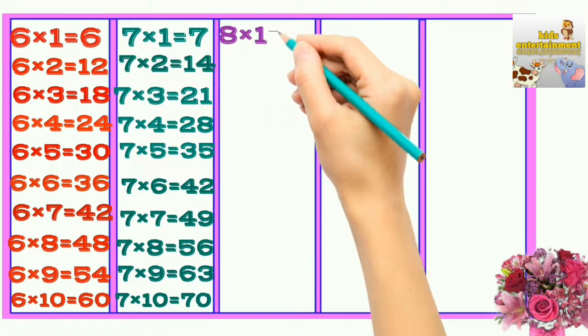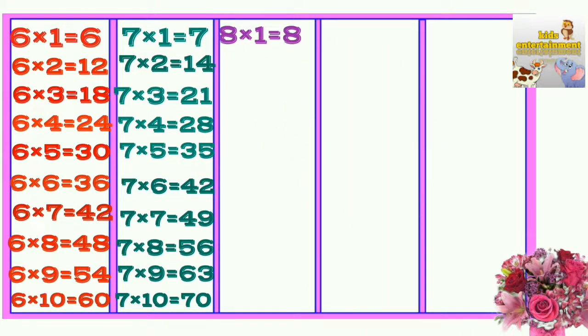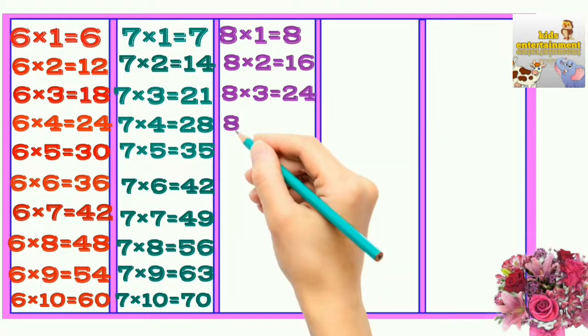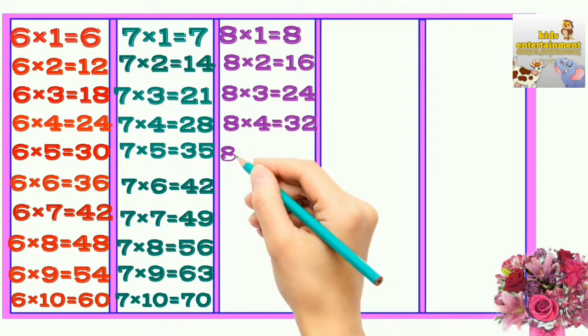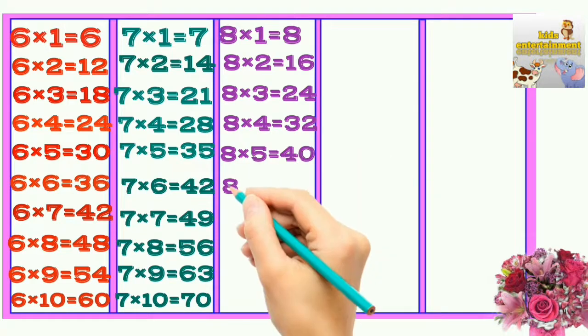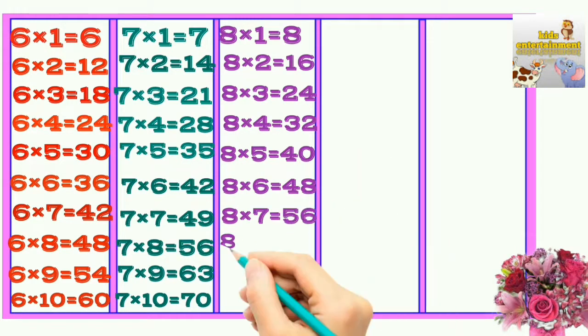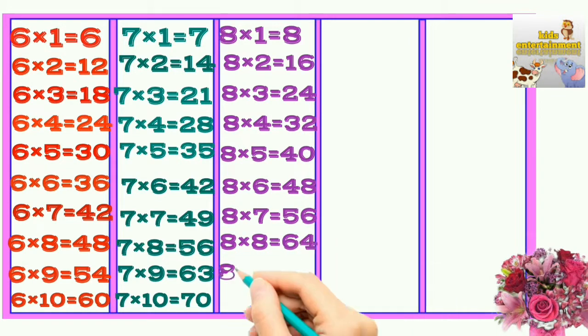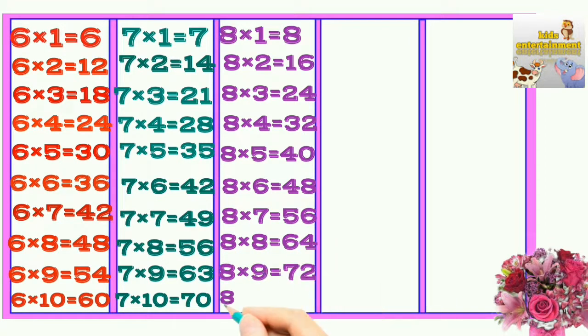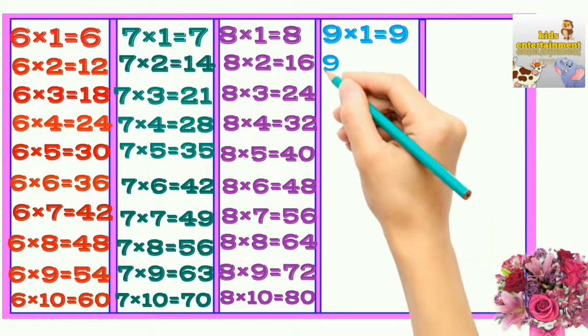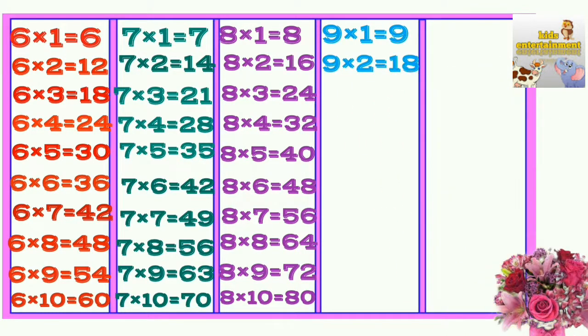8×1=8, 8×2=16, 8×3=24, 8×4=32, 8×5=40, 8×6=48, 8×7=56, 8×8=64, 8×9=72, 8×10=80. 9×1=9, 9×2=18.